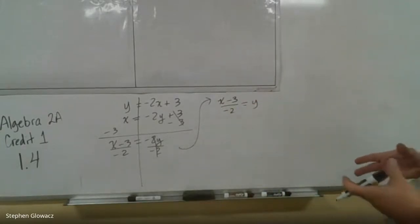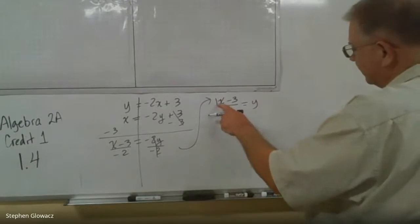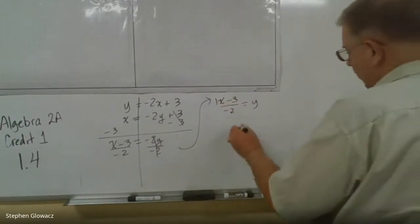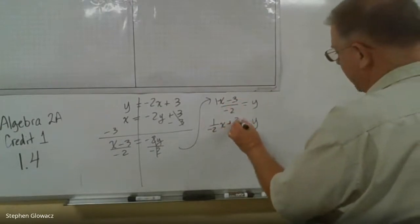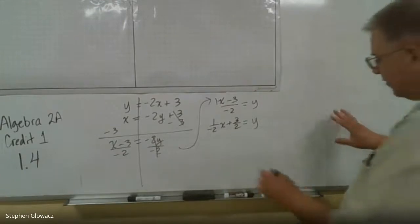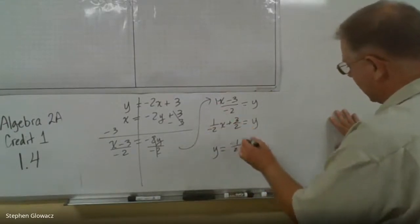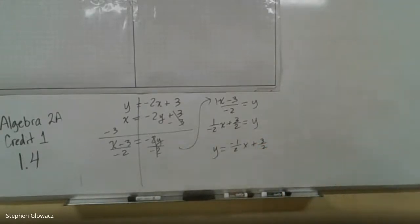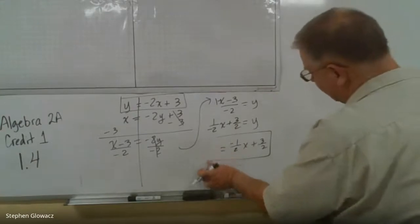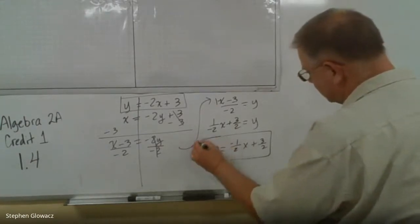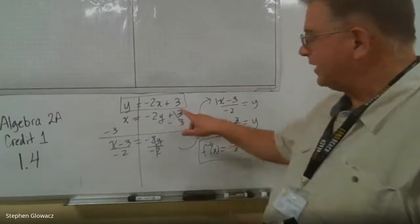Since we're going to be graphing this, we want to get it into slope-intercept form. Dividing each term by -2, we get y = (-1/2)x + 3/2, since a negative divided by a negative is positive. Cleaning things up, the negative moves to the top, giving y = (-1/2)x + (3/2). Now substituting f⁻¹(x) back in for y, our inverse function is f⁻¹(x) = (-1/2)x + (3/2).